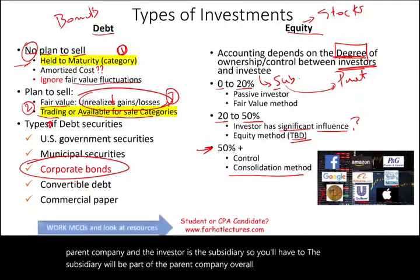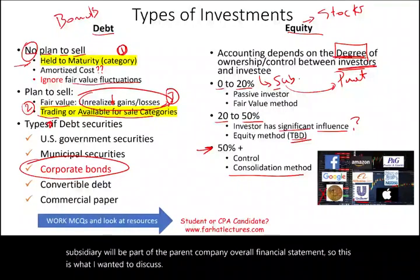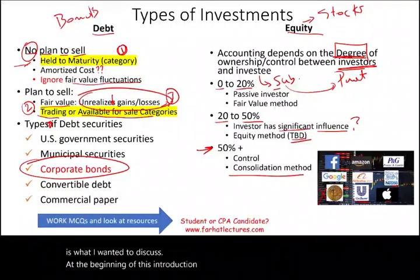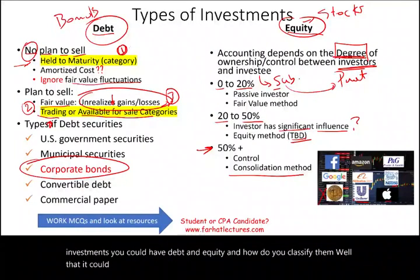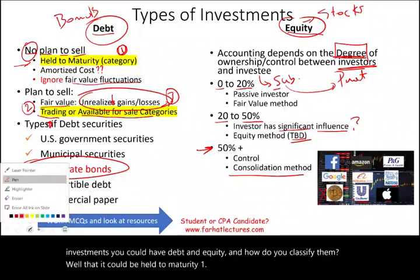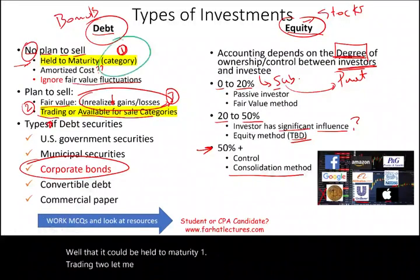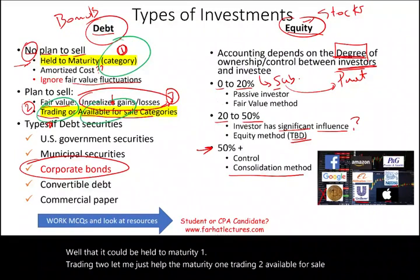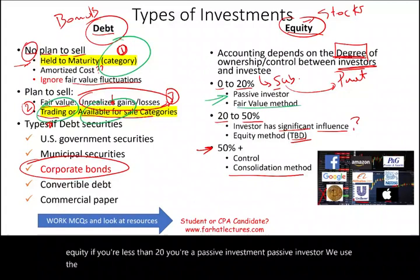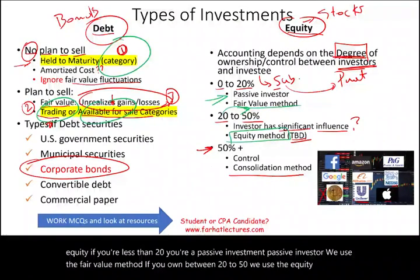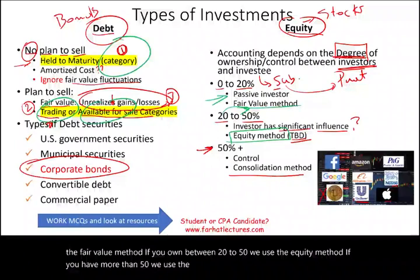This is what we discussed in this introductory session: the types of investments — debt and equity — and how to classify them. For debt: held to maturity, trading, and available for sale. For equity: if you're less than 20%, you're a passive investor and we use the fair value method; if you own between 20% and 50%, we use the equity method; if you have more than 50%, you have control and we use the consolidation method.